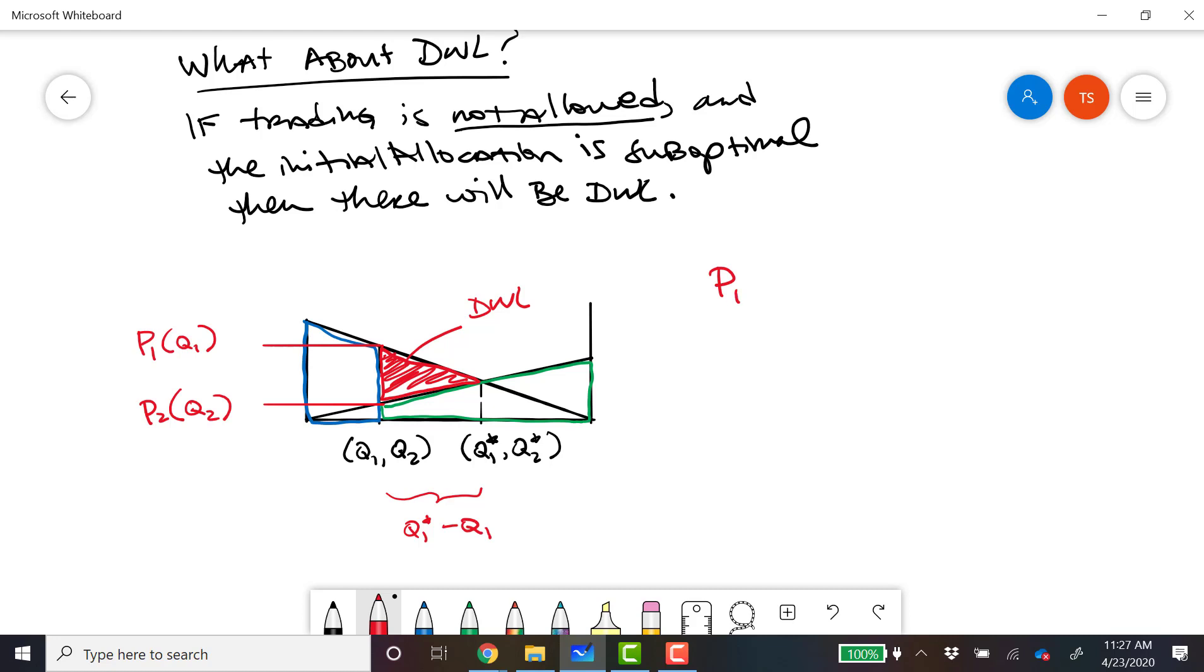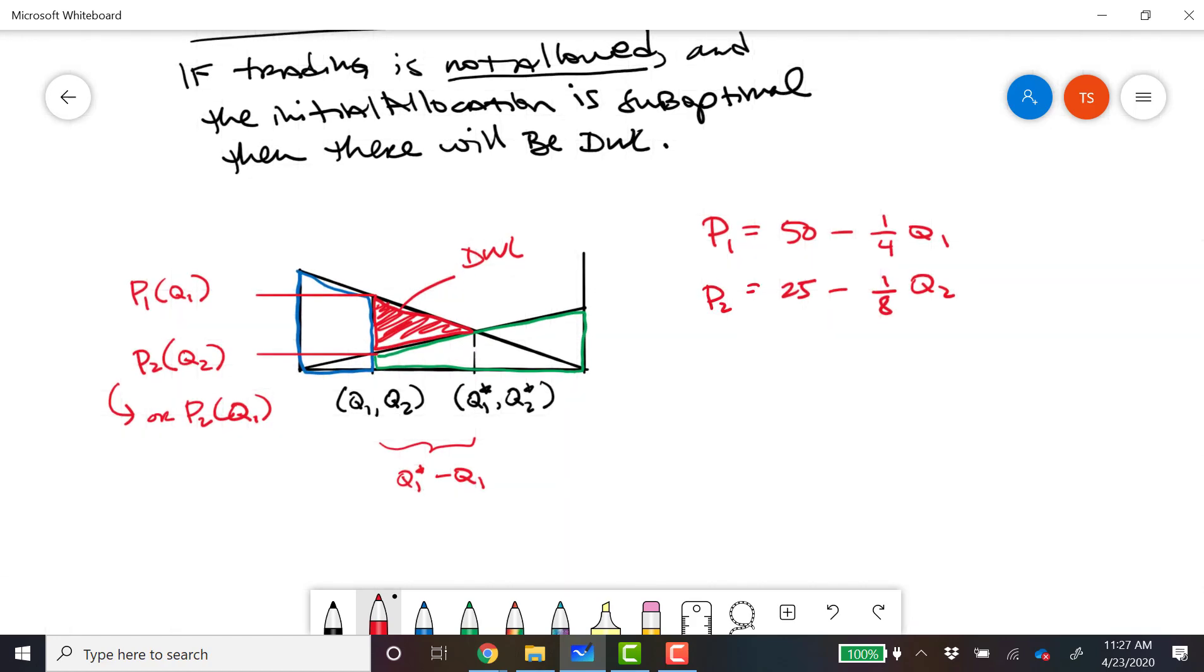So let's say that P1 equals 50 minus 1 fourth Q1. And let's say that P2 equals 25 minus 1 eighth of Q2. So we could also, notably, we could do P2 of Q1 here if we wanted to. So first let's convert this. So let's convert P2 into a supply curve. So this gives us P2 equals 1 eighth of Q1. How did I know that? Because here we have Q1 bar is equal to 200 and here Q2 bar is equal to 200. So they're the same. So we can do our little trick.